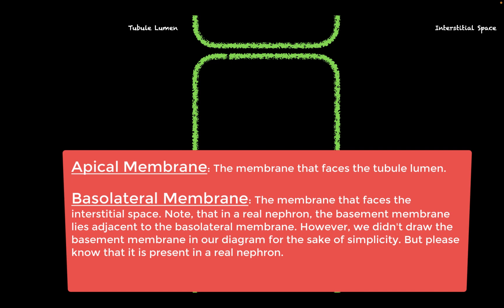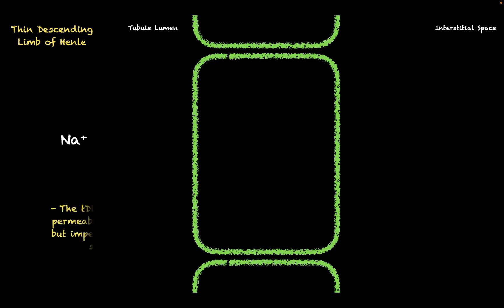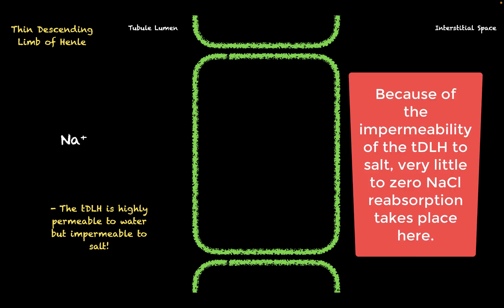Now that we understand the diagram, let's talk about how sodium chloride is reabsorbed in the loop of Henle. Starting with the thin descending limb of Henle: if a sodium ion were in the tubule, it would basically bounce off the epithelial cells. The reason is that the thin descending limb is highly permeable to water but impermeable to salt. As a result, very little to no sodium chloride reabsorption takes place in the thin descending limb.